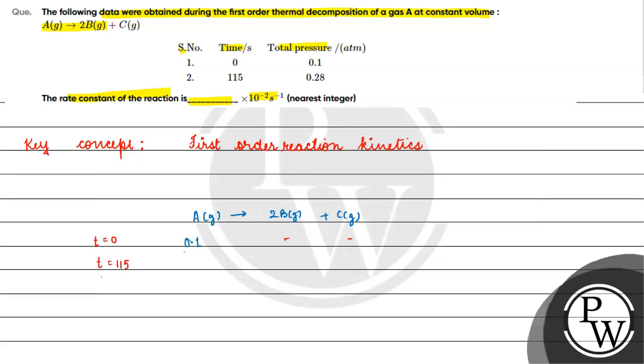At time t = 115 seconds, what will happen? Some amount of A will be consumed and B and C will be formed. The total pressure will be (0.1 - x) + 2x + x = 0.28.